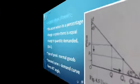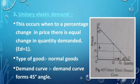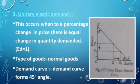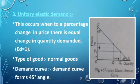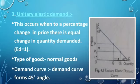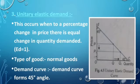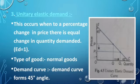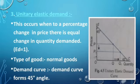Next hum discuss karenge unitary elastic demand. Unitary elastic demand kya hota hai? This occurs when to a percentage change in price, there is equal change in quantity demanded. Jab aapke price aur quantity demanded mein barabar ka, equal change hai, toh tab kya hai? Us case mein jo aapka elasticity kehlaati hai woh hoti hai aapki unitary elastic demand. Is case mein aapki jo ED ki value aayegi woh aati hai usually one. Normal goods ke case mein aisa hota hai ki jo bhi aapke normal goods hain, unke case mein haan jitna price mein change aaya, quantity mein bhi utna change aayega.